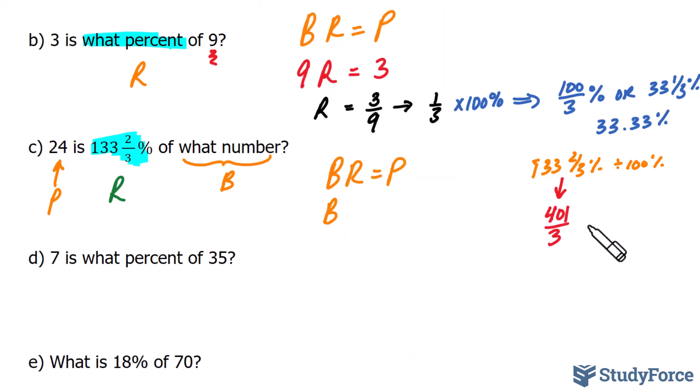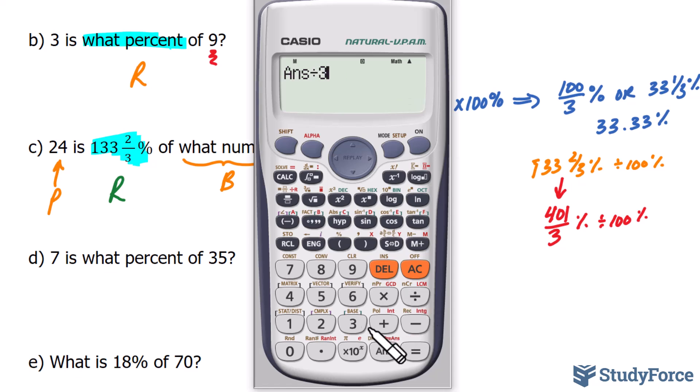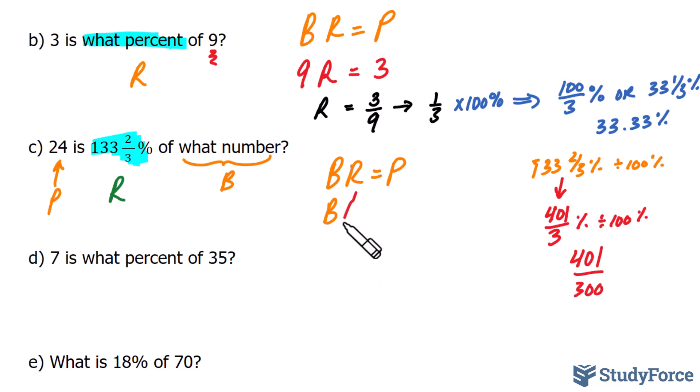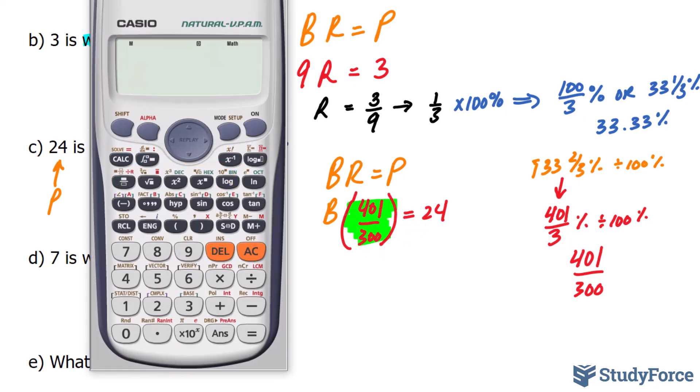401 over 3 percent divided by 100%. Let's use our calculator. So we take the value on our screen, divide it by 3, and then divide that by 100. We end up with that value as our R. Put that into our formula. 401 over 300 is equal to 24. And now all we have to do is divide both sides of the equation by that factor. So 24 divided by 401 by 300. And we end up with our answer or our base value. If we round this to two decimal places is 17.96.